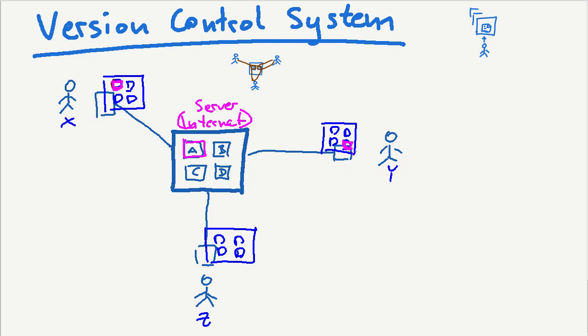Ms. Y also does the same — also synchronizes with the server and puts their file there. Also no conflicts, everything is all right. No one else touched the file. But here's another important thing: the version that you locally have is not the version that they had. So you're not up to date. You have to synchronize with the server to get the same versions, to get the update that they did. And after you did this, you have the most latest version of all the files.